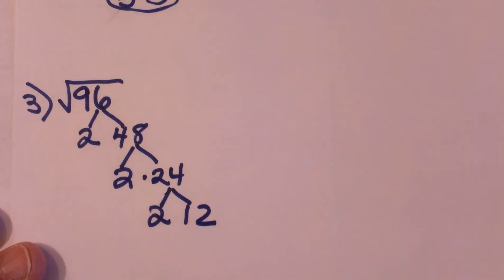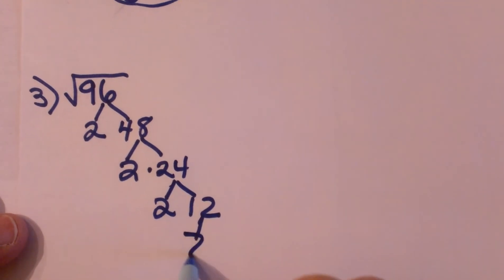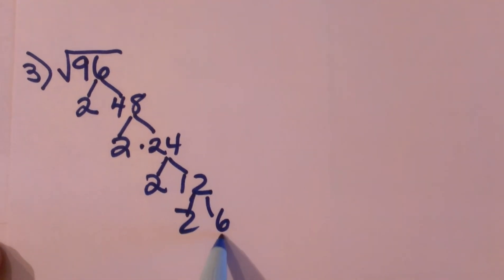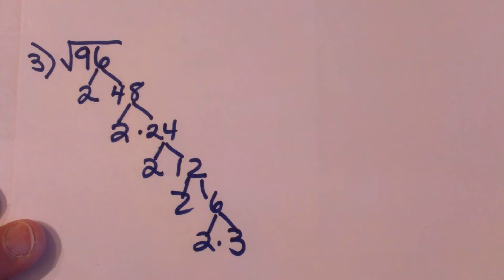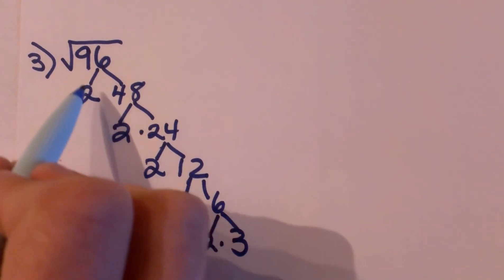So 2 times 12 and then 12 breaks down to 2 times 6 and 6 breaks down again 2 times 3. Wow we have a lot of factors here but what I am going to do is I am going to start pairing them up.